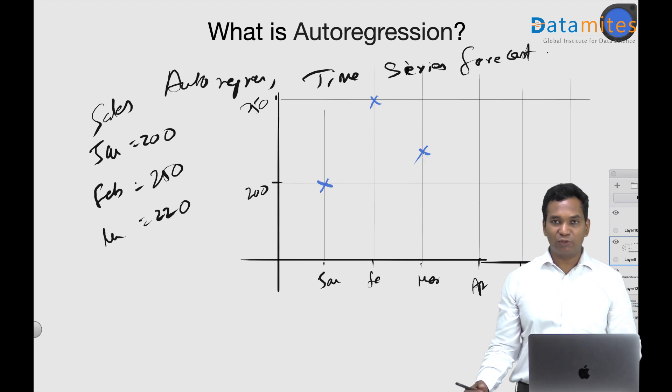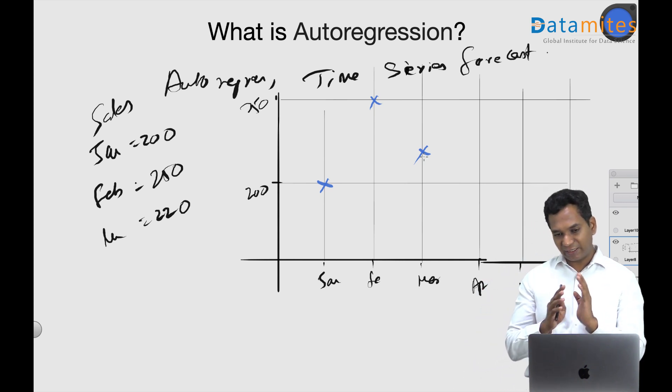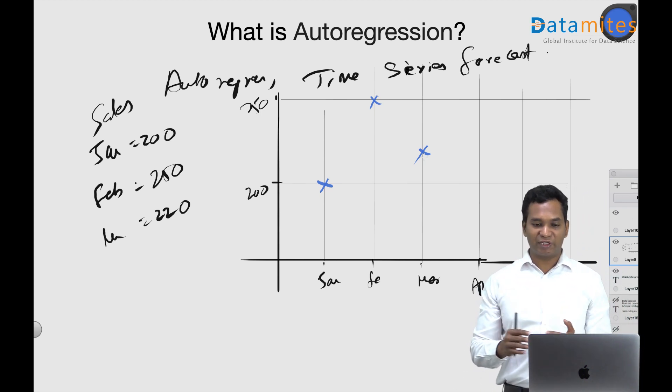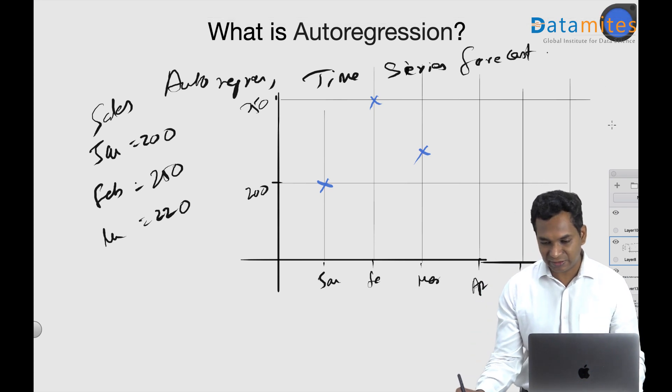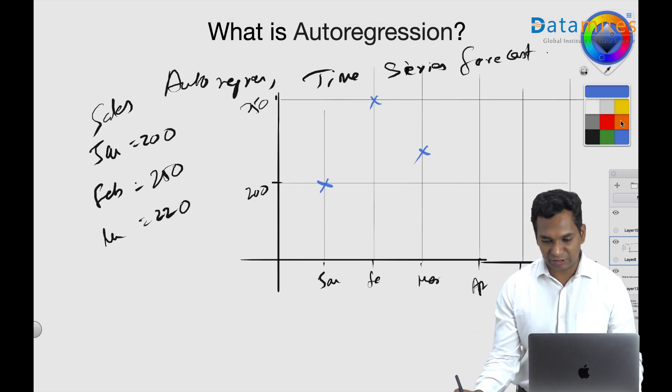So I want to predict for the April, May, and other things. All right, what I can do is I can see that it looks like a kind of regression. I have several points. I could actually draw a line like this, for example.